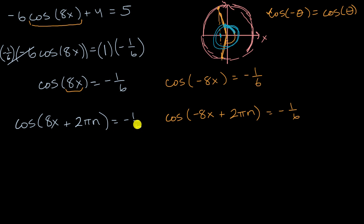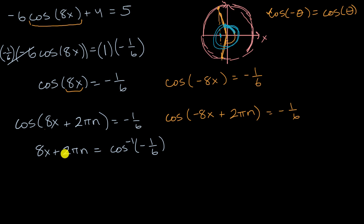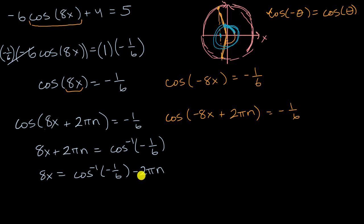Taking the inverse cosine of both sides in the first case: eight X plus two pi N equals the inverse cosine of negative one sixth. Subtracting two pi N from both sides gives eight X equals the inverse cosine of negative one sixth minus two pi N. Dividing both sides by eight, X equals one eighth times the inverse cosine of negative one sixth, minus pi over four times N.